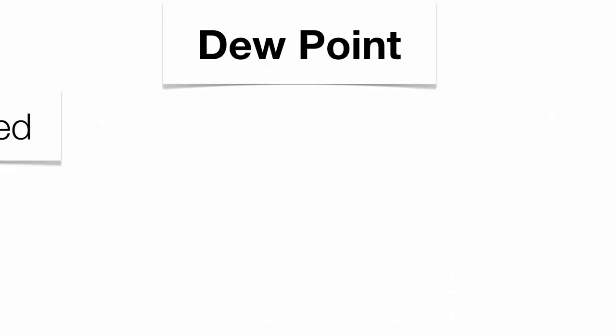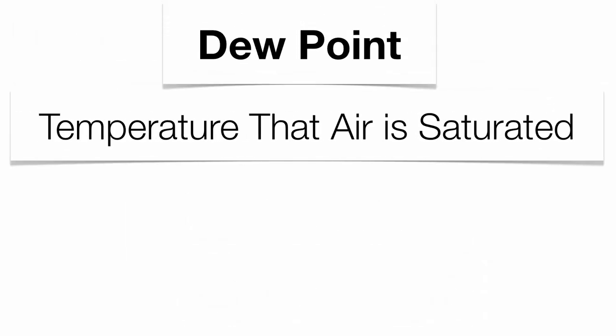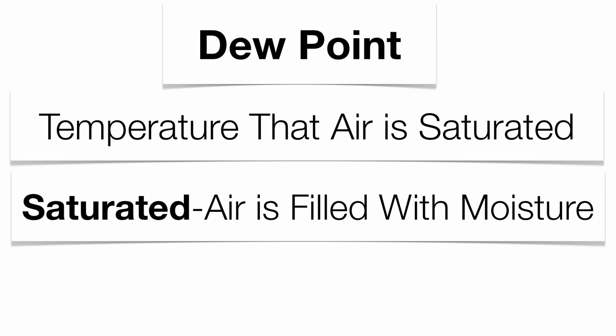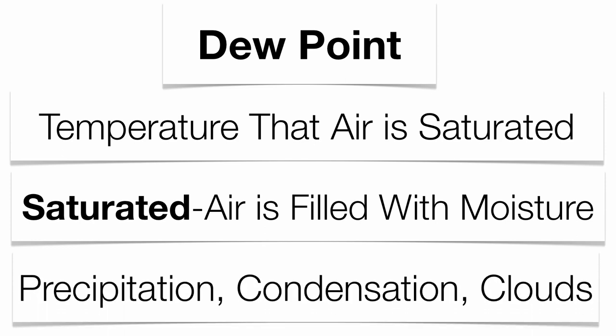Dew point is a neat phenomenon because it tells us when the air is saturated. It's the temperature at which the air is going to be completely filled up with moisture — that's what the word saturated means. At that specific dew point temperature, precipitation, condensation, and clouds are going to be very evident. There's going to be a lot of moisture in the air, very simply by looking at the clues outside.